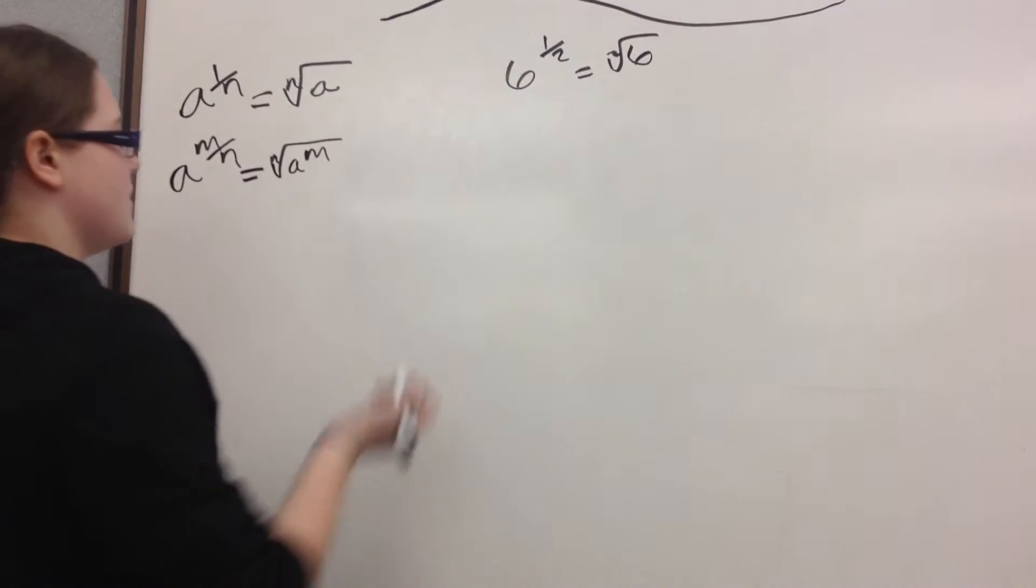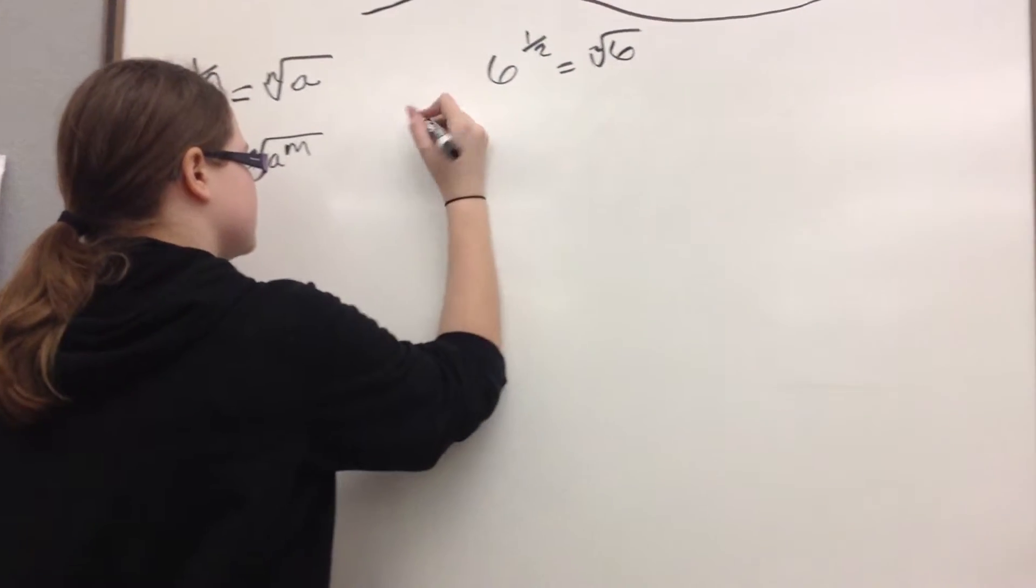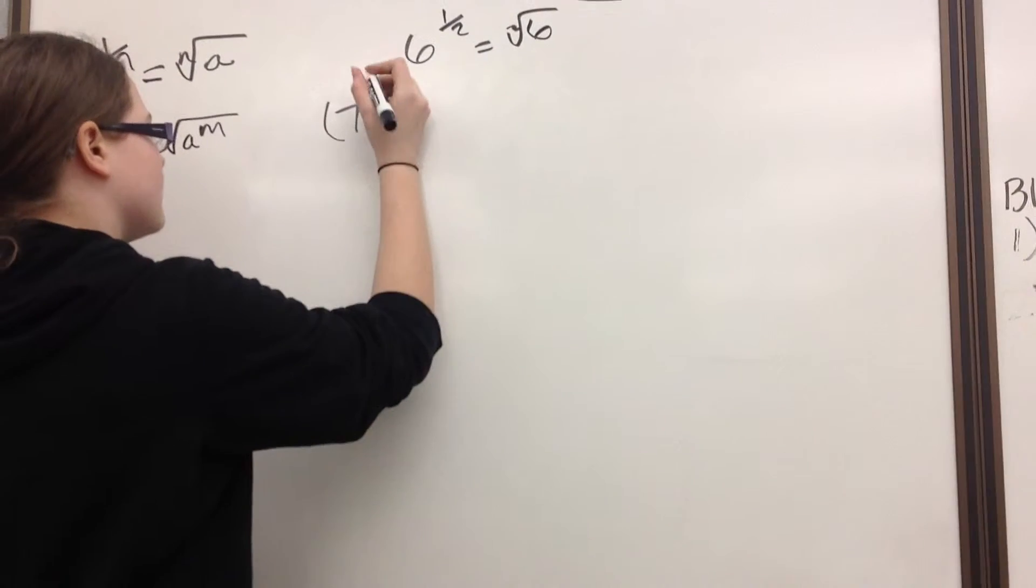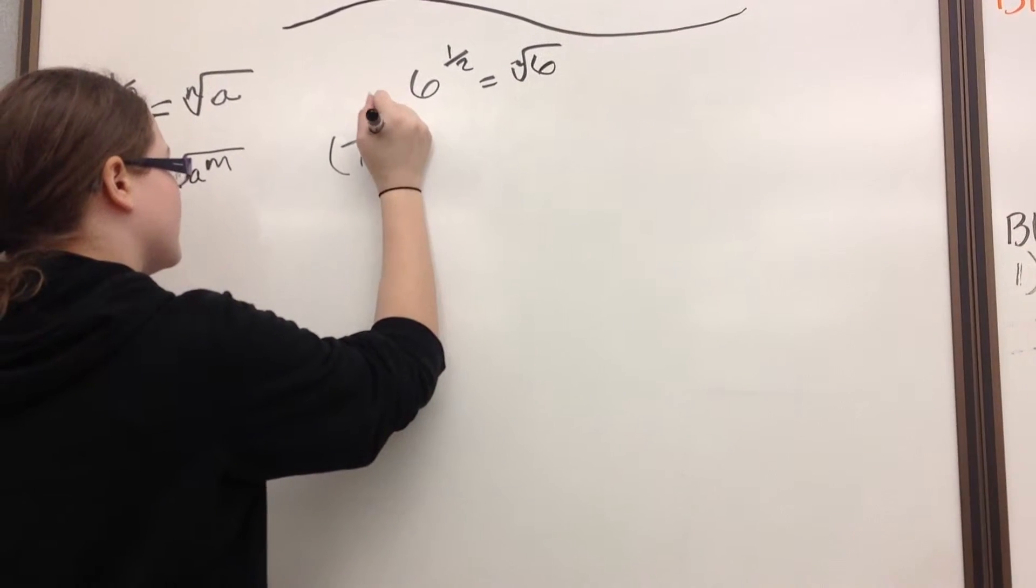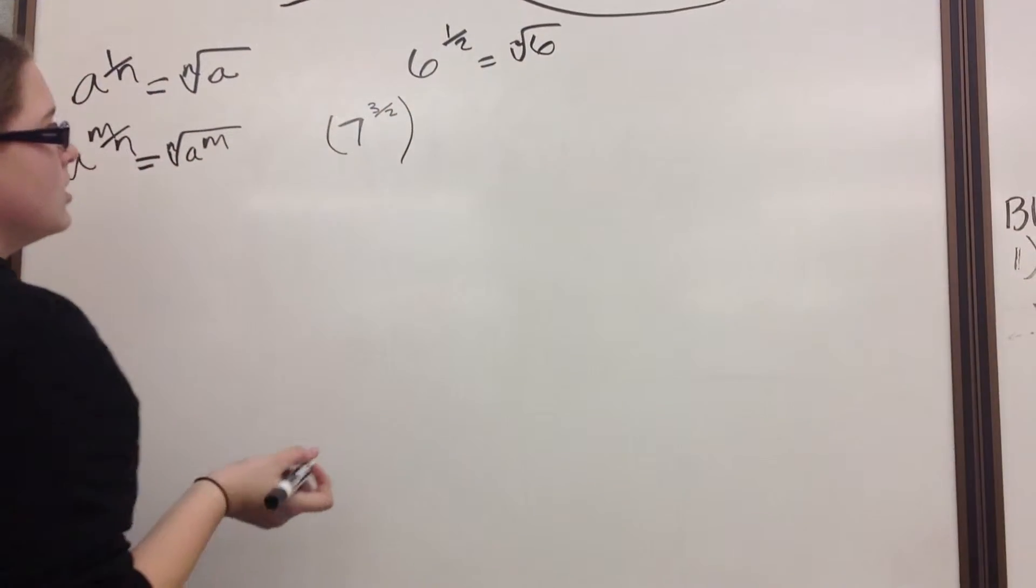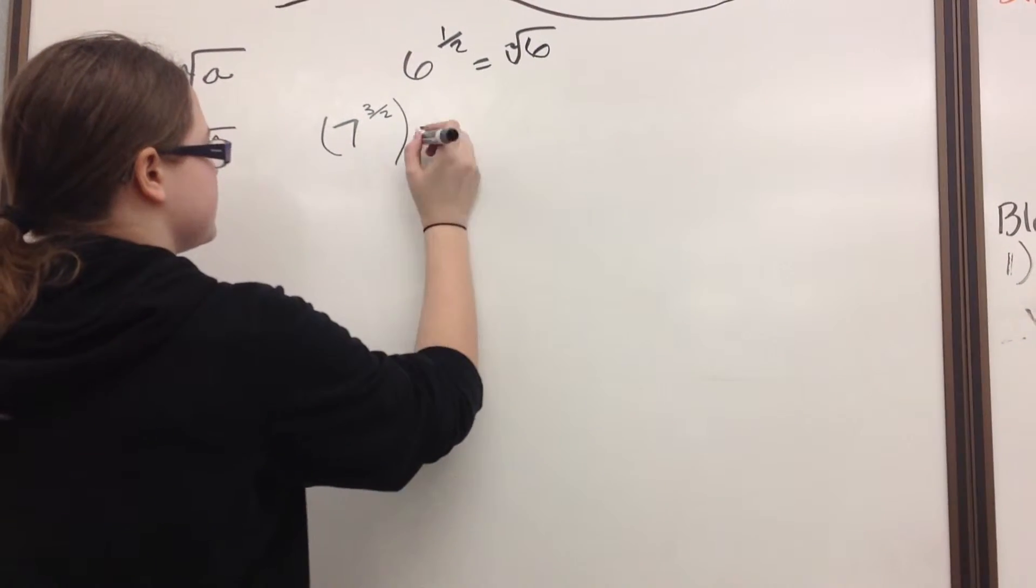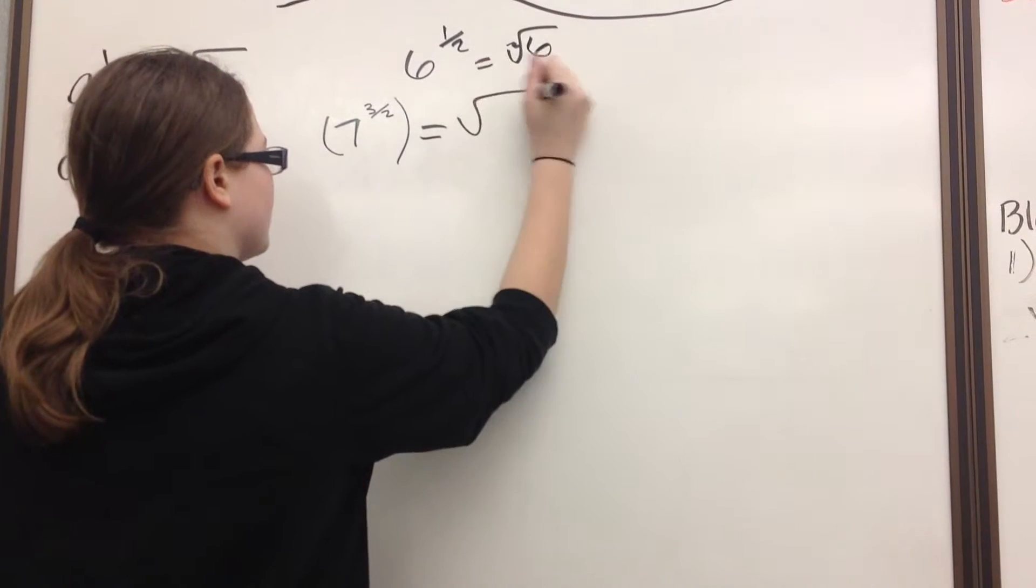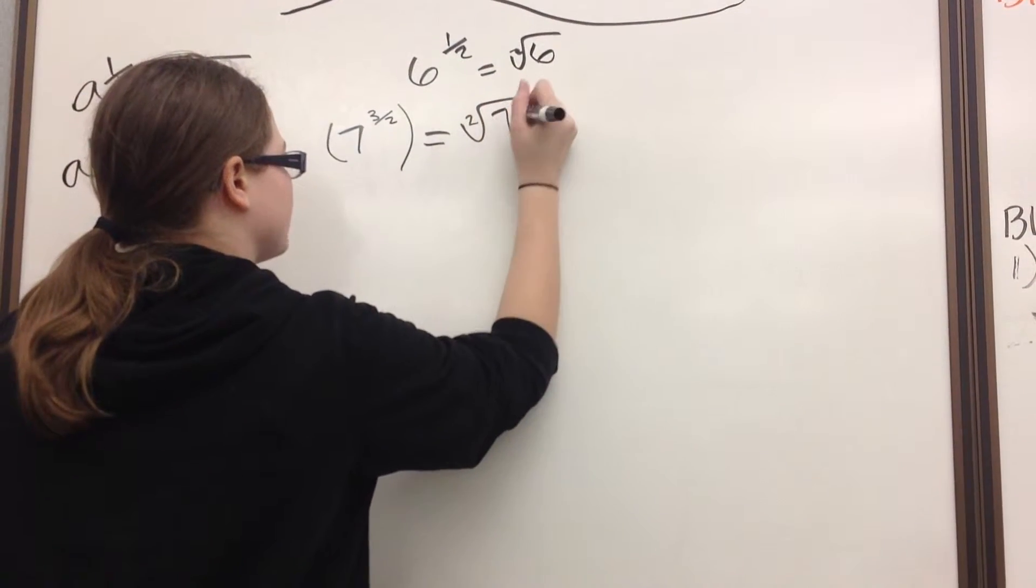So let's say you have 7 to the 3 over 2. So then that is equal to the square root of 7 cubed.